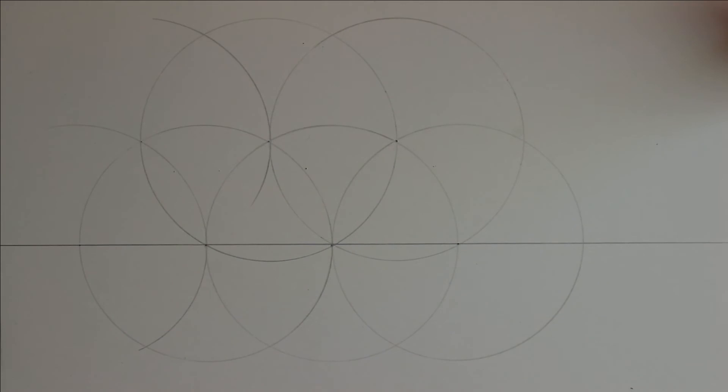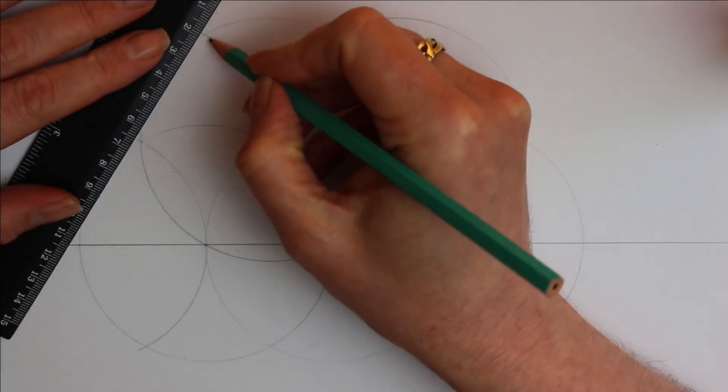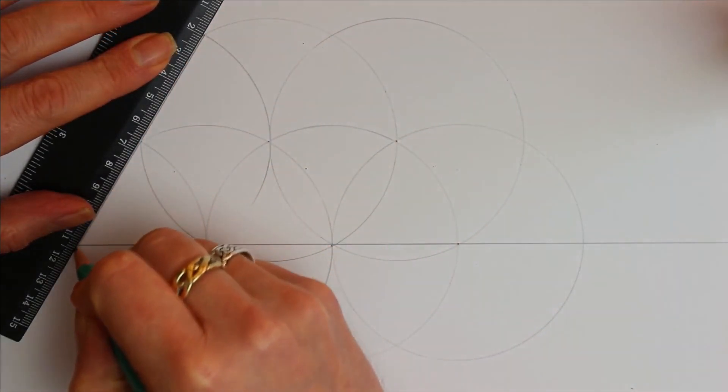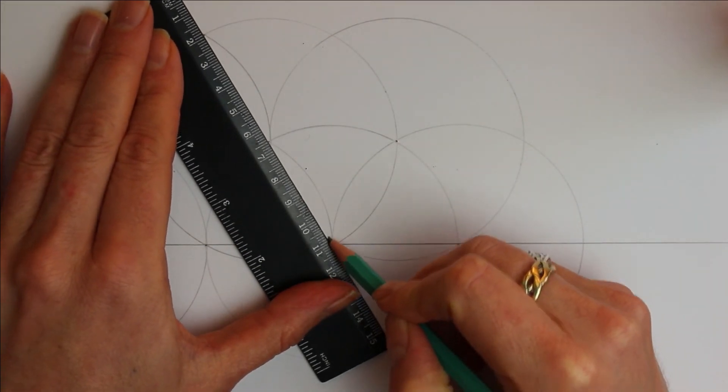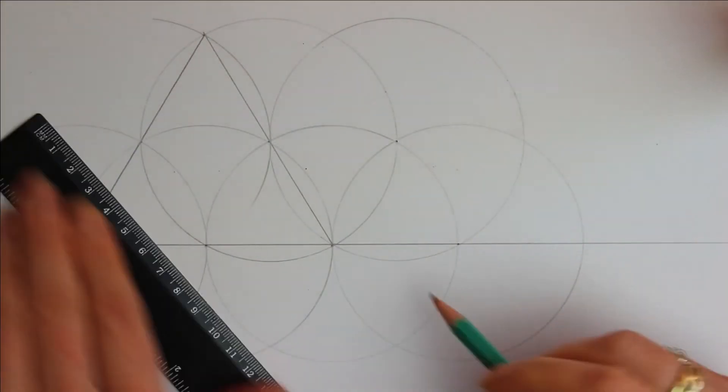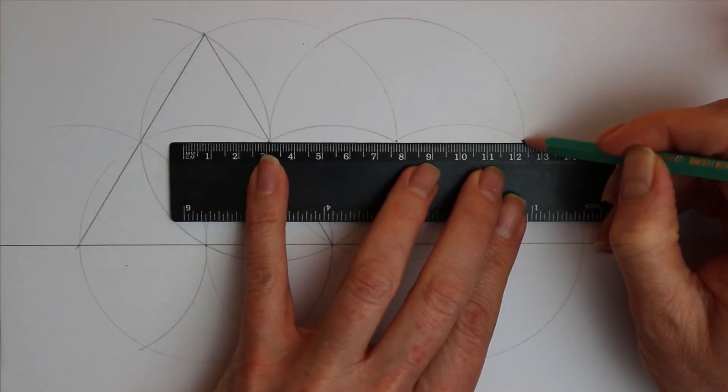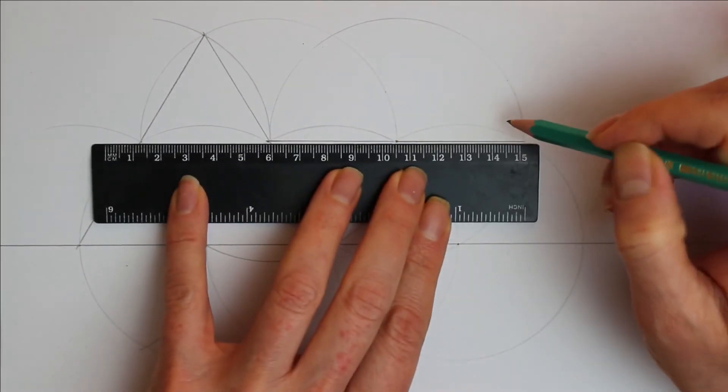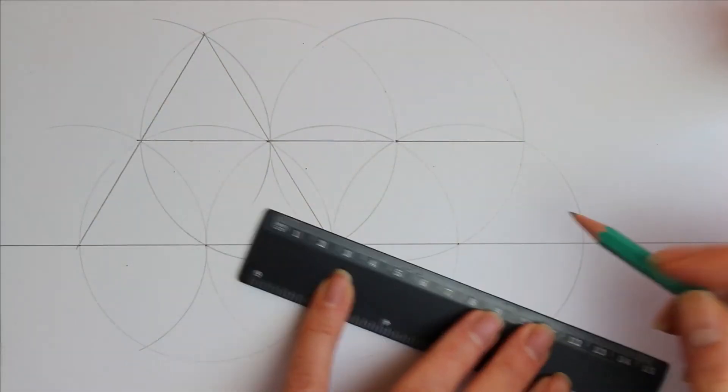So now it's a case of joining up all the lines. So for this step is just to join up where they intersect. As you can see there's shapes within shapes here. There's a triangle there. We're going to be creating an inverted triangle here. And we'll let that line go over there.